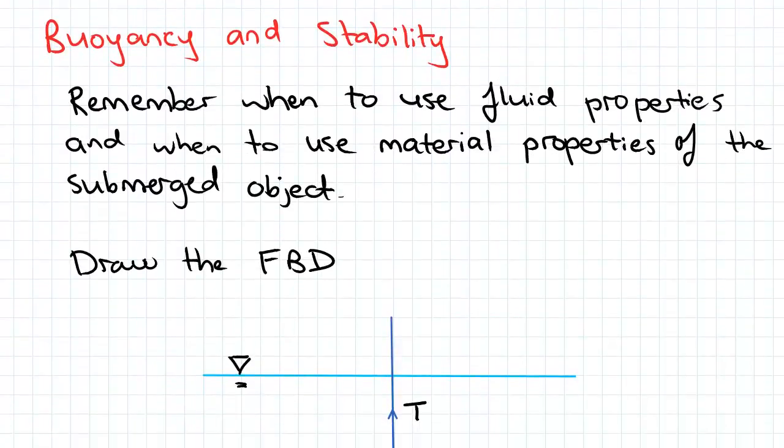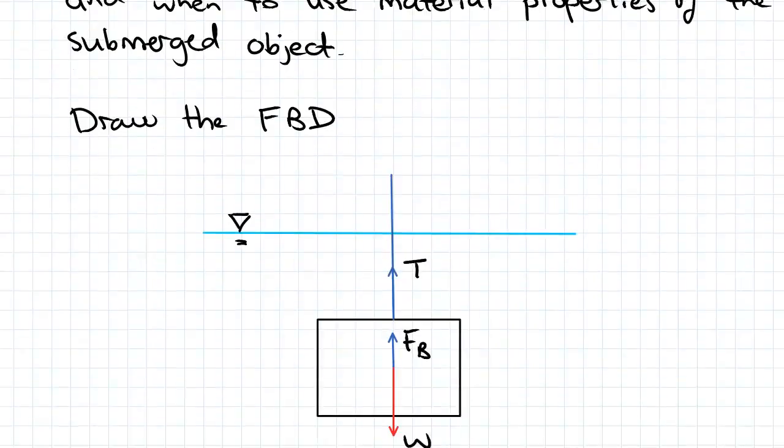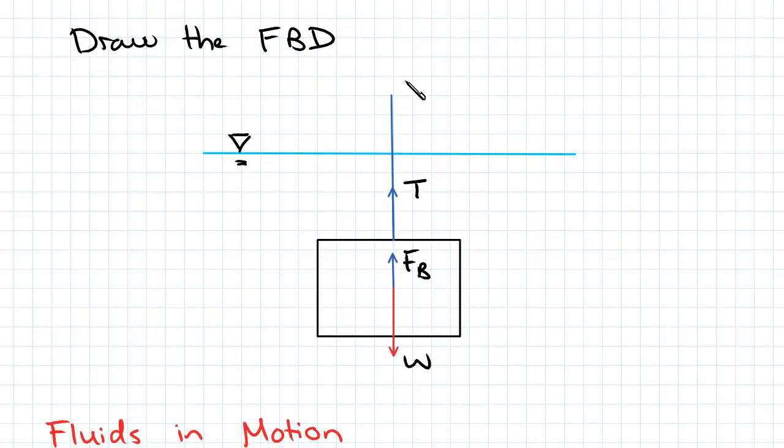For the buoyancy and stability topic, remember when to use fluid properties and when to use material properties of the submerged object - it gets a bit confusing. Always draw the free body diagram because you will have forces on different points of the submerged surface: on the top surface, or the center of gravity, or the center of mass. Always draw anything you can really.